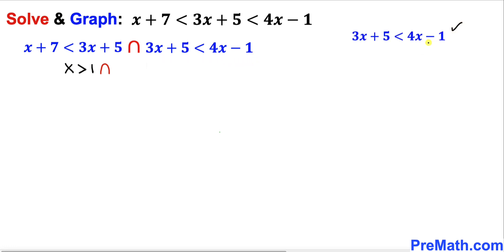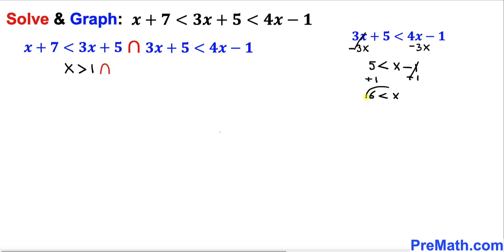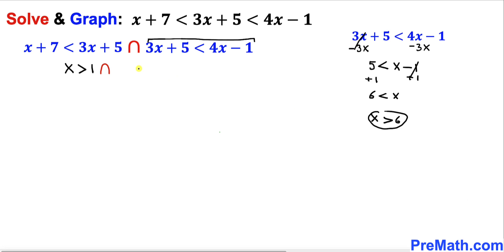Now let's solve the second inequality: 3x plus 5 is less than 4x minus 1. Subtracting 3x from both sides gives us 5 is less than x minus 1. Adding 1 to both sides gives 6 is less than x, which we rewrite as x is greater than 6. So we replace this part of the inequality with x is greater than 6.